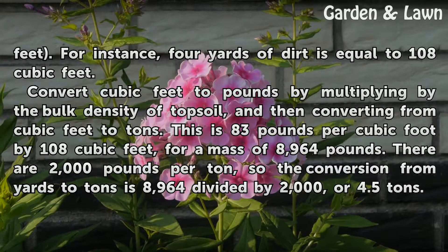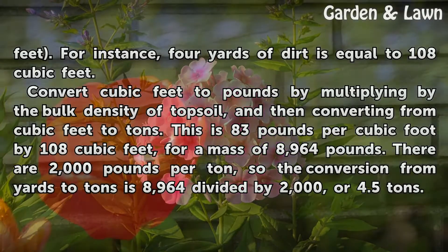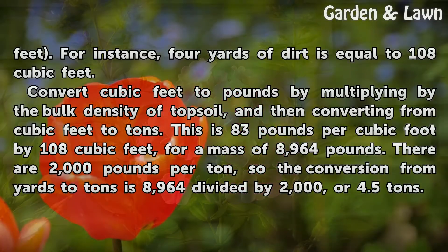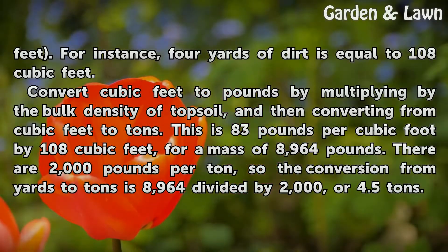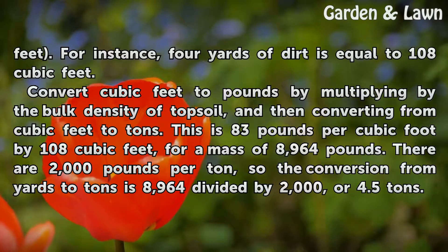For instance, 4 yards of dirt is equal to 108 cubic feet. Convert cubic feet to pounds by multiplying by the bulk density of topsoil, and then converting from cubic feet to tons.